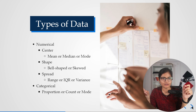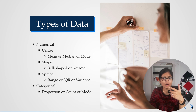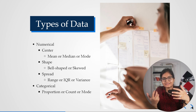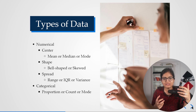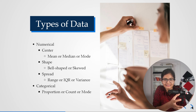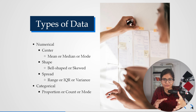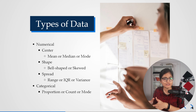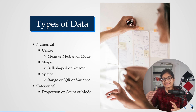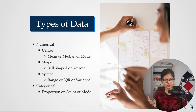All key terms I'm discussing — range, IQR, variance, bell-shaped, skewed, mean, median, mode — I will create separate videos to give you the in-depth intuition behind each concept, and later we'll do implementation using a dataset to show visualizations. For categorical data, the key term is mode, or proportional count.